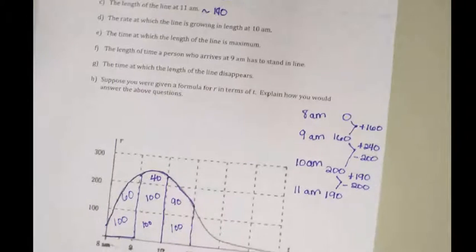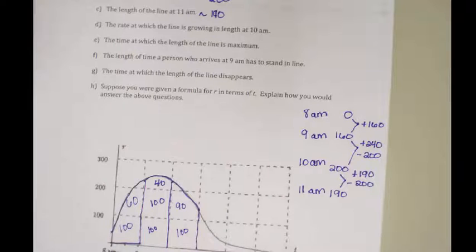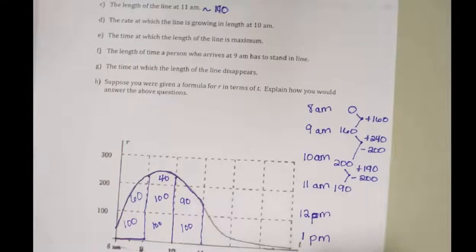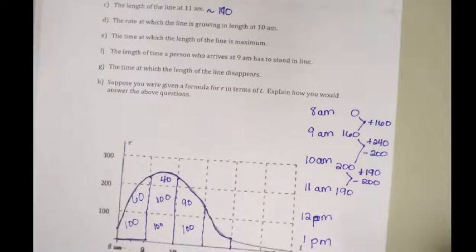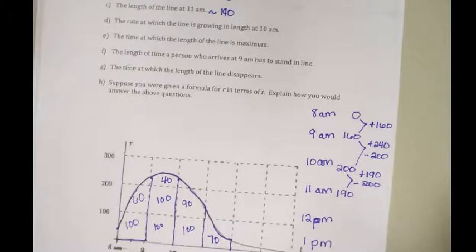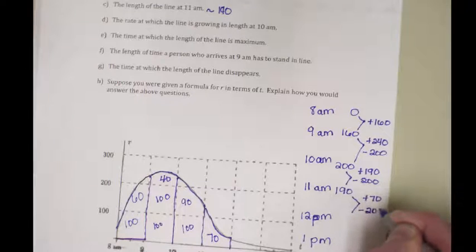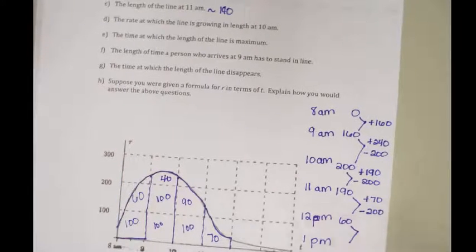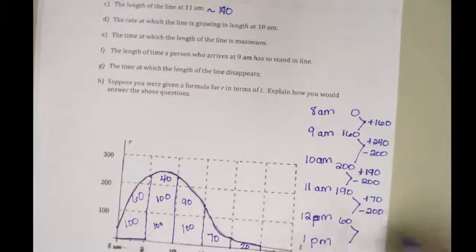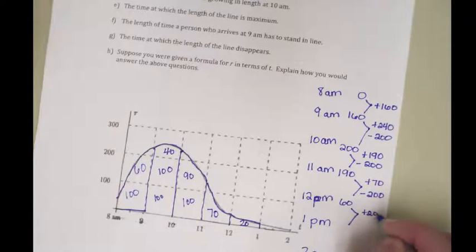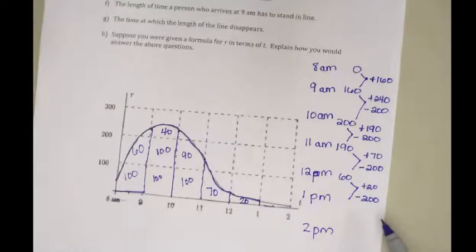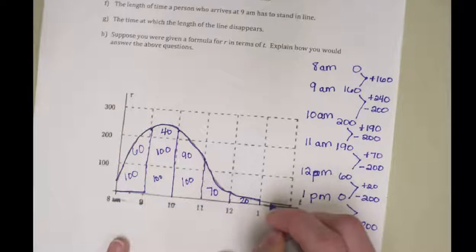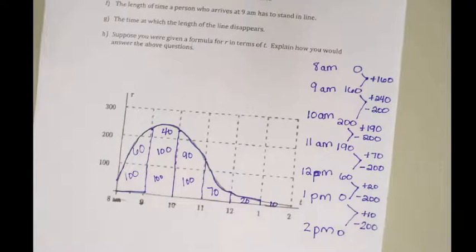At 12 p.m., between 11 and 12 it looks like about 70 people arrive, but we lose 200. So 190 plus 70 is 260, minus 200, leaves about 60 people in line. Between 12 and 1, maybe 20 people arrive but we can serve up to 200 — so nobody's in line at 1 p.m. Between 1 and 2, only about 10 people arrive and we lose 200, so at 2 p.m. nobody's in line either. By 1 p.m. the line should have disappeared.